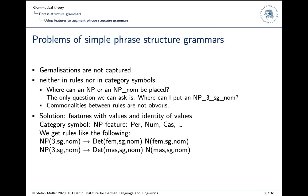And the solution for this problem is that we assume features with values and then identify the values. So instead of just the category NP, we have the category NP with features for person, number and case. And our rules would look like the following two. So an NP with third person singular nominative consists of a determiner feminine singular nominative, noun feminine singular nominative. Or the second rule, it consists of a determiner masculine singular nominative and noun masculine singular nominative. So we have two similar rules. The difference is just whether the gender is feminine or masculine.